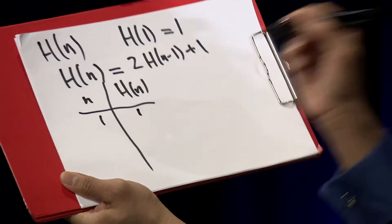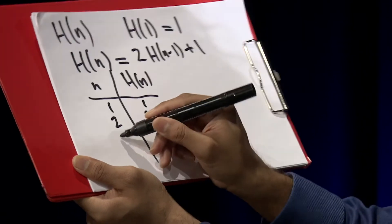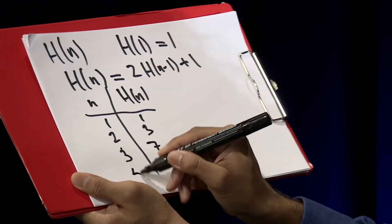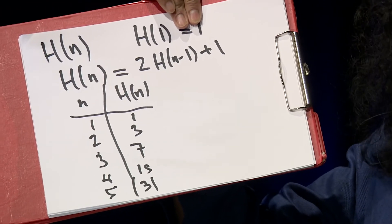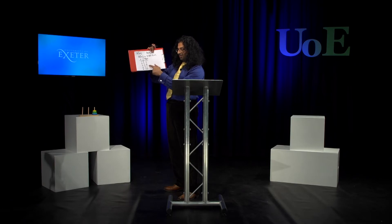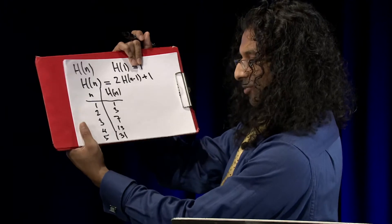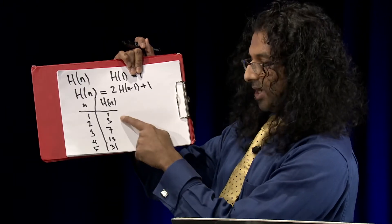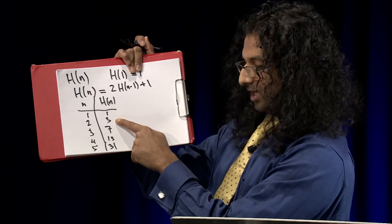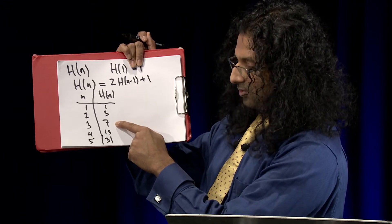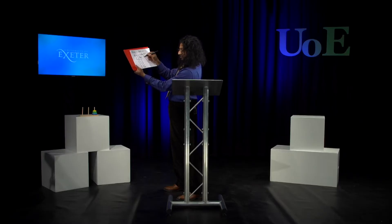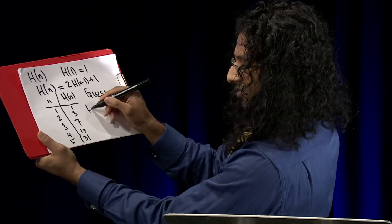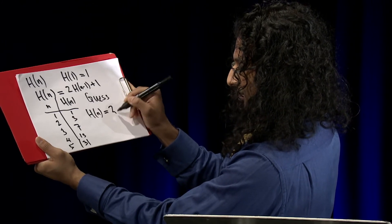If N is 1, it takes 1 move; N is 2, three moves; N is 3, seven moves; N is 4, fifteen moves; N is 5, thirty-one moves. Can we see a pattern? Each of these is one less than a power of two: 1 is 2 minus 1, 3 is 2² minus 1, 7 is 2³ minus 1, 15 is 2⁴ minus 1, and 31 is 2⁵ minus 1. So we guess that H(N) = 2^N − 1.